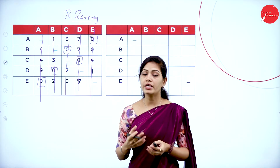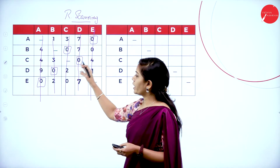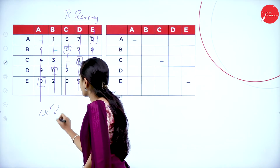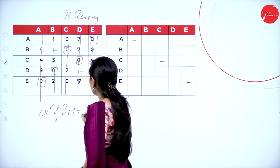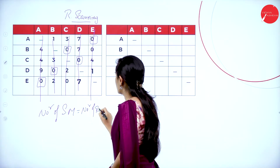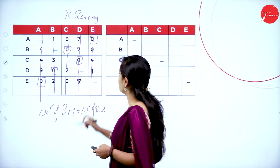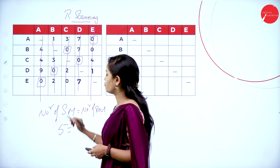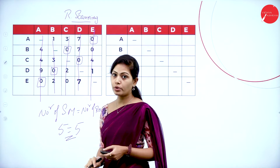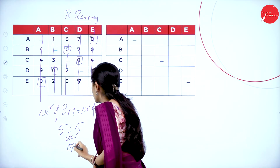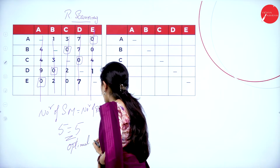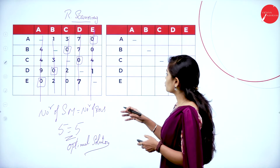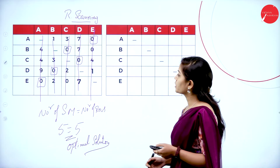To check the optimality condition: the number of square-marked zeros must equal the number of rows. How many zeros are assigned? One, two, three, four, five. And the number of rows is five. They are equal, so the optimality condition is satisfied. We can now find the assignment.